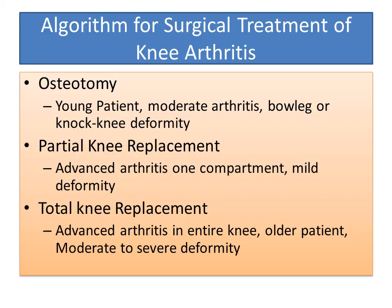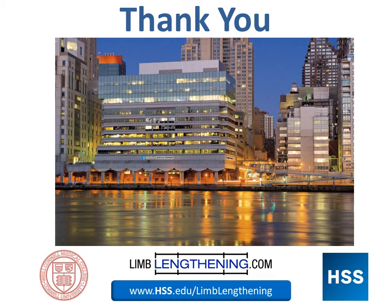In summary, osteotomy is indicated for the young patient with moderate arthritis and bow leg or knock knee deformity — it's a joint preservation technique and it doesn't burn bridges for a future joint replacement. Partial knee replacement is a good technique for advanced arthritis in one compartment, but it's only appropriate for mild deformity and when arthritis is localized to one compartment. Total knee replacement is a very strong technique that allows the surgeon to treat advanced arthritis in the entire knee; it's best in the older patient and can be used for moderate to severe deformity. I hope this review of the surgical treatment of knee arthritis and the algorithm has been helpful. Thank you.